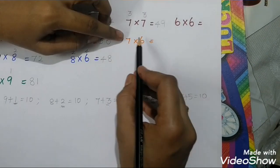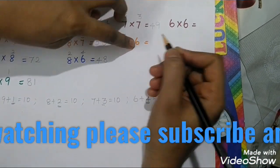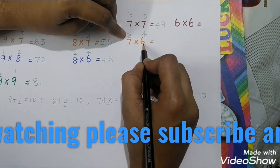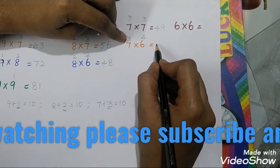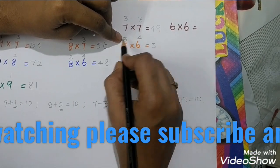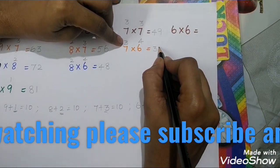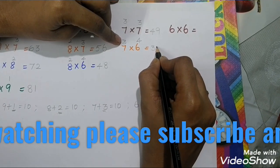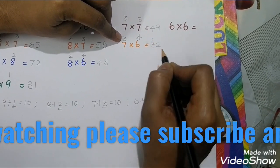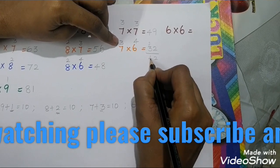For 7 times 6: 7's friend is 3 and 6's friend is 4. Cross subtraction: 6 subtract 3 equals 3. Multiply the friends: 3 times 4 equals 12. For two-digit results, write the units digit (2) and carry the tens digit (1) to add to the tens place. So the answer is 42.